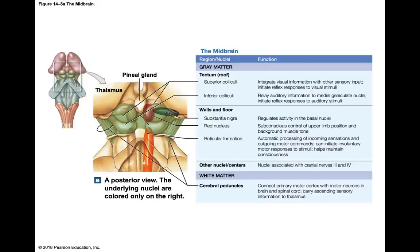For example, when you see a bright light, the superior colliculus coordinates a reflex where your eyes, head, and neck flinch away from that bright light. The inferior colliculus receives information from the ears — a loud noise will generate a command to your head, neck, and trunk, causing you to jump. That is the inferior colliculus coordinating that response.